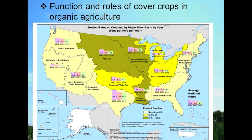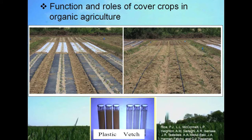For example, in a tomato production system comparing black plastic mulch and a vetch mulch, pans were laid out in the rows to collect surface water runoff. With the plastic mulch, we have much higher sediment load in the runoff. The volume of runoff was also reduced by 5 to 15-fold in the cover crop system compared to the black plastic system.